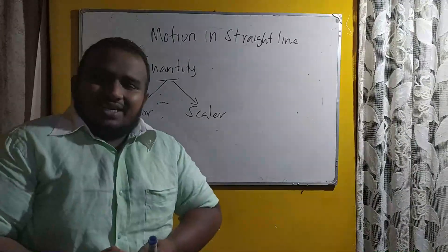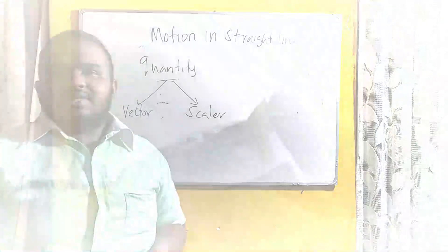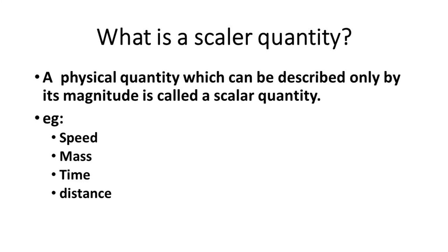What is a scalar quantity? A scalar quantity is a physical quantity which can be described only by its magnitude. Examples of scalar quantities are speed, mass, time, and distance, among several others. We are taking just four examples here.